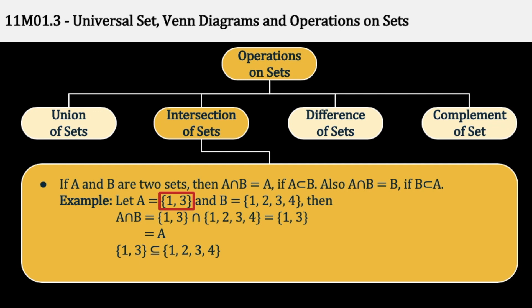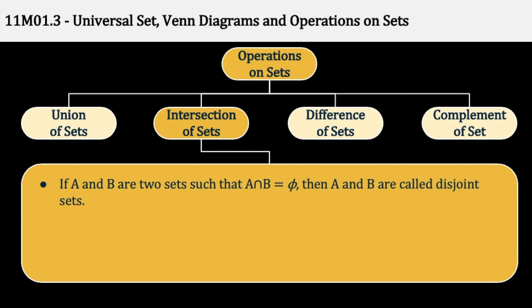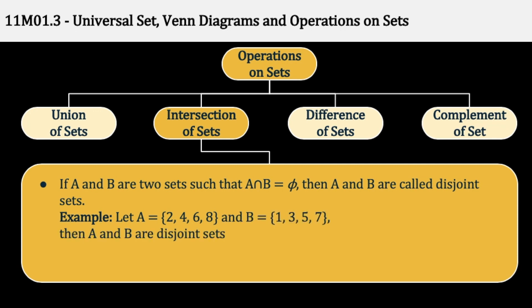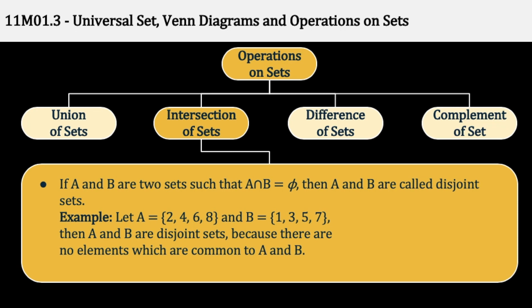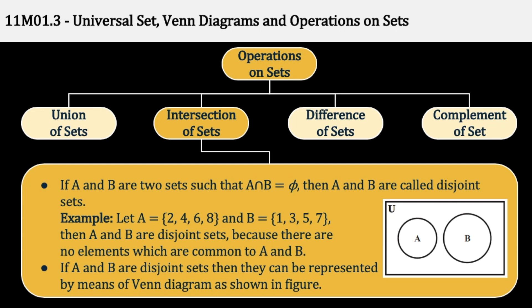और हमने देखा कि {1, 3} is a Subset of {1, 2, 3, 4}, मतलब A is a Proper Subset of B. If A and B are two sets such that A Intersection B equal to Phi, या फिर Null Set, then A and B are called Disjoint Sets. मतलब की Null Set मतलब की इनमें कोई भी element common नहीं है, तो वो Disjoint Sets कहलाते हैं. Let A be {2, 4, 6, 8}, B be {1, 3, 5, 7}, हम Intersection निकालेंगे तो Null Set आएगा, because there are no common elements, and hence A and B are called Disjoint Sets. इनका Venn Diagram से ऐसे दिखाते हैं — दो Venn Diagrams बने हैं जिसमें कोई भी area common नहीं है, मतलब कोई भी element common नहीं है.